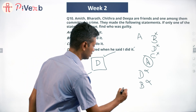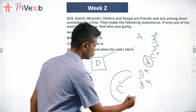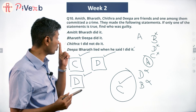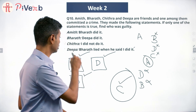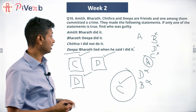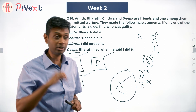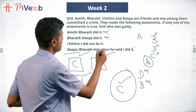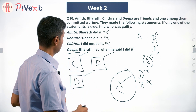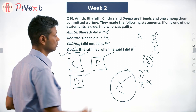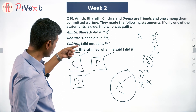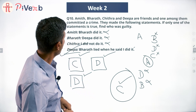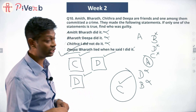Chitra commits the crime — it's the only possibility. If Chitra committed the crime: 'Bharat did it' is false, 'Deepa did it' is false, 'I did not do it' is false, and 'Bharat lied when he said I did it' is true. So Chitra committing the crime and only Deepa speaking the truth — that works and ticks all the boxes. Who was guilty? Chitra was guilty.